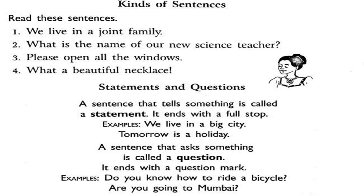And in the fourth sentence, 'What a beautiful necklace,' a strong emotion is expressed. This type of sentence is called an exclamatory sentence. Some other examples of exclamatory sentences are: 'What a piece of luck.' 'How kind of you.' 'How wonderful.'